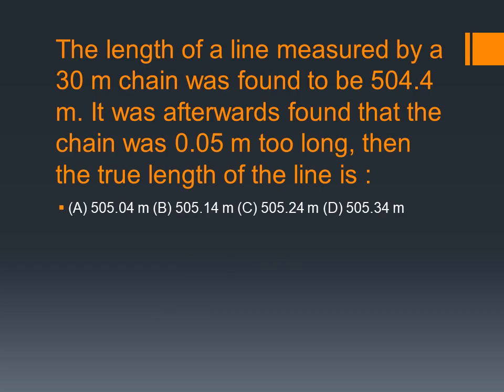The length of a line measured by a 30m chain was found to be 504.4m. It was afterwards found that the chain was 0.05m too long than the true length of the line. If we have a correction for tape, we are going to find the true length.